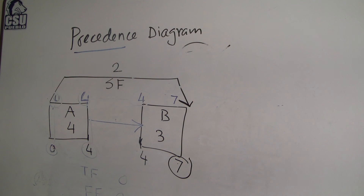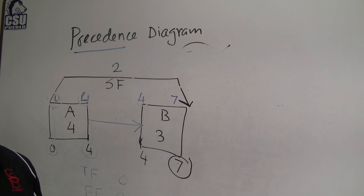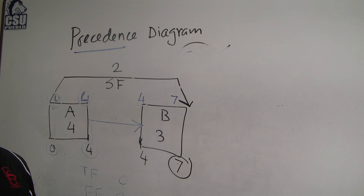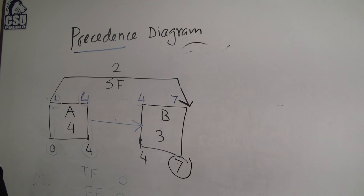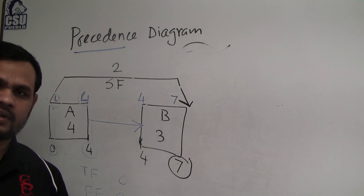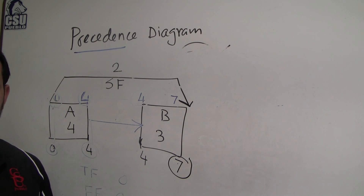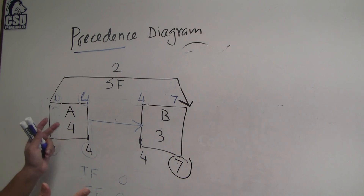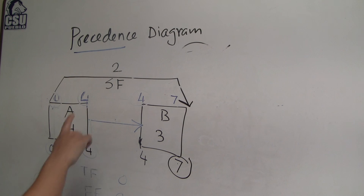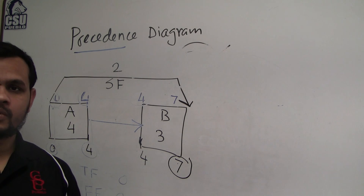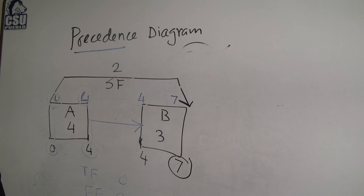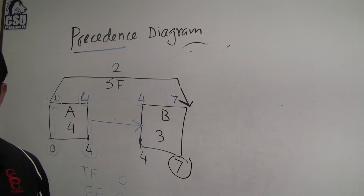We will continue with the precedence diagram. To recap: the precedence diagram is an advancement of the node diagram. The node diagram can only do finish-to-start, while the precedence diagram can do finish-to-start, finish-to-finish, start-to-start, and start-to-finish. Sometimes we combine these if needed. In real life, node diagram is sufficient for most cases, but in special cases we may need the precedence diagram. We can also incorporate lags — that is very common. In the next video, I will show more and bigger examples for the precedence diagram.